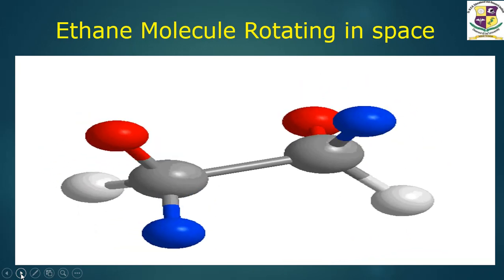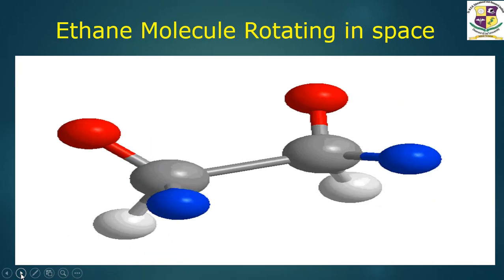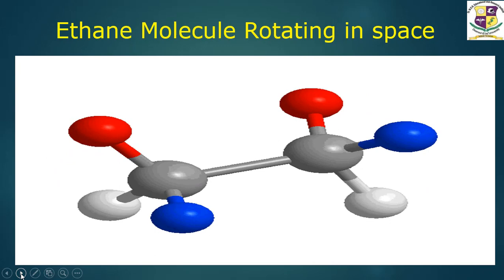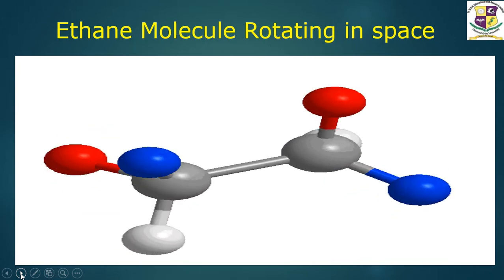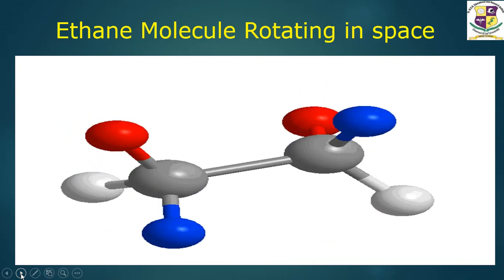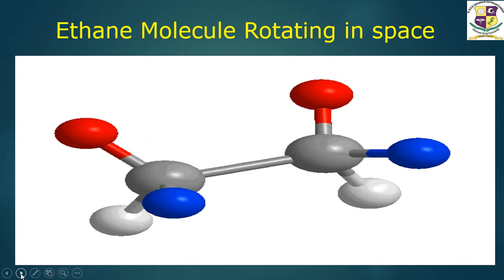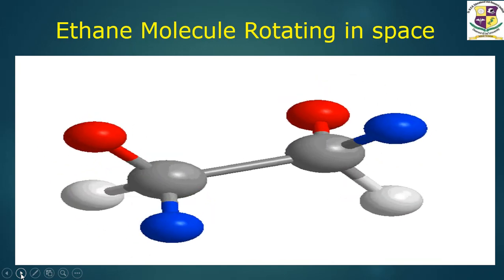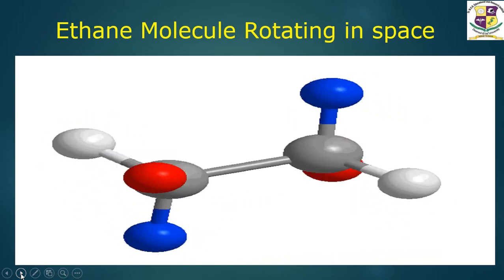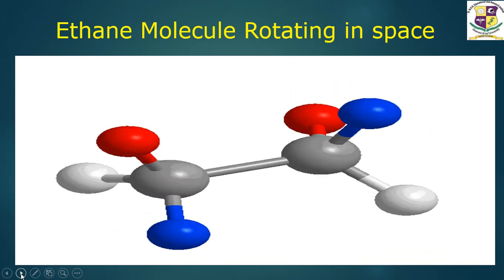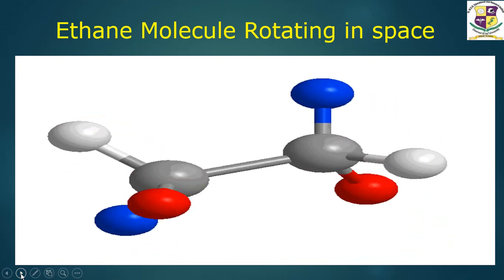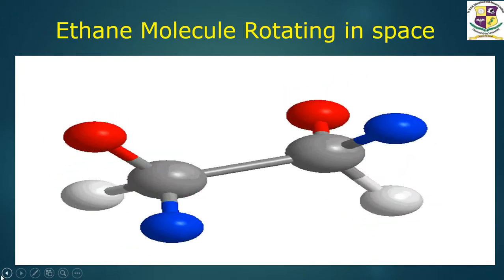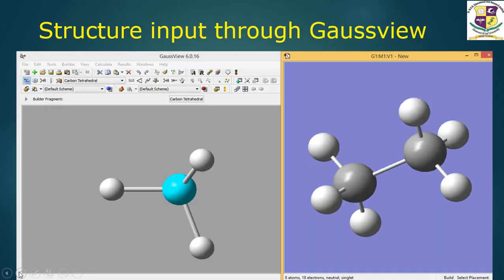When the carbon-carbon single bond of the ethane molecule undergoes rotation, the molecule takes different shapes in space called conformers. The potential energy associated with these molecules are scanned to analyze the shape of the molecule at which it has a minimum potential energy, which is useful to identify the stability of the molecule and in turn will take researchers further towards the reactivity of the molecule and related studies.